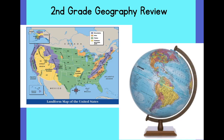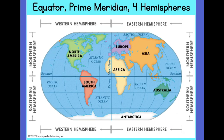In our Geography Unit we learned how to compare maps and globes that show and represent geographical information in different ways. We learned to identify and locate the equator, prime meridian, and four hemispheres. The equator is an imaginary horizontal line that divides the earth into the northern and southern hemispheres. The prime meridian is an imaginary vertical line that divides the earth into the western and eastern hemispheres.